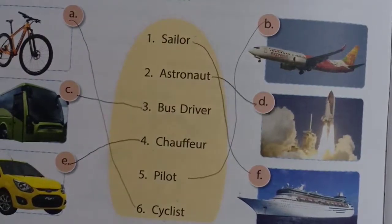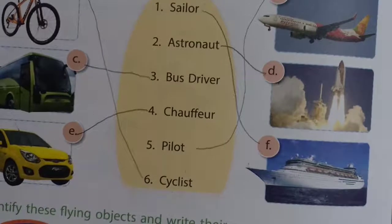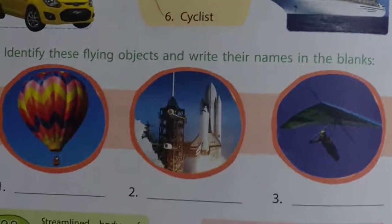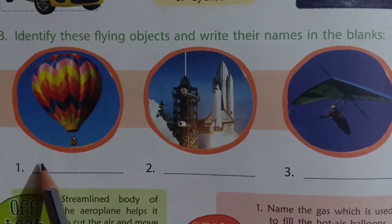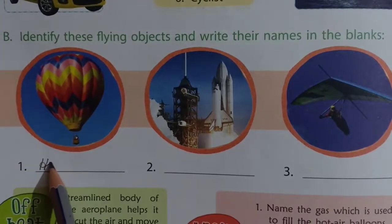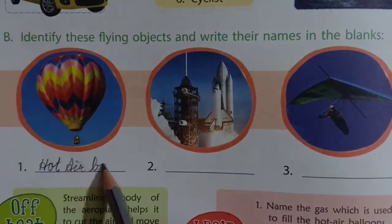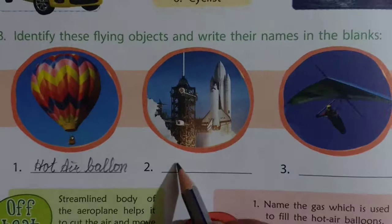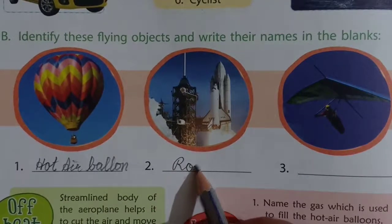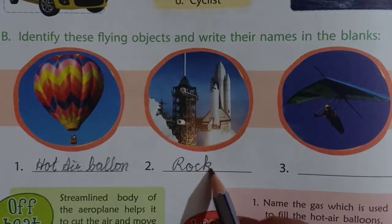Now there are 3 objects. Identify these flying objects and write their names in the blanks. What is this? Hot air balloon. Hot air balloon. And this — it is a rocket. Spelling: R-O-C-K-E-T.